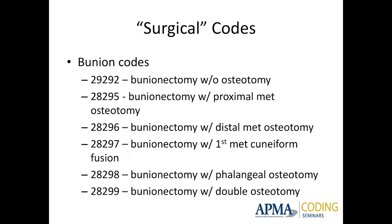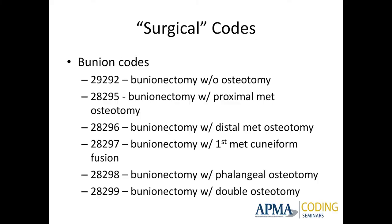Bunion codes — we'll talk about these in detail later. You've got bunionectomy with osteotomy and without osteotomy. Without osteotomy is your McBride or Silver procedure. You won't see those proprietary names — McBride, Austin, Base Wedge, Mitchell, Reverdin, Chevron — in the CPT book anymore. CPT is moving away from name procedures toward description of the procedure. So: bunionectomy without metatarsal osteotomy includes a Keller. 28295 is bunionectomy with proximal osteotomy; 28296 is bunionectomy with distal osteotomy.